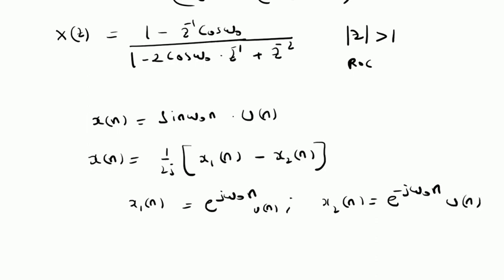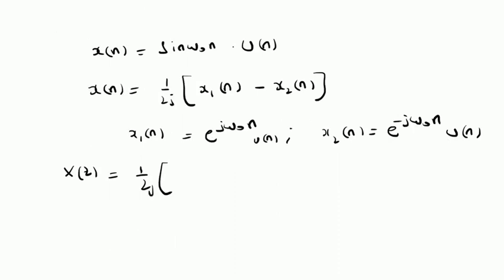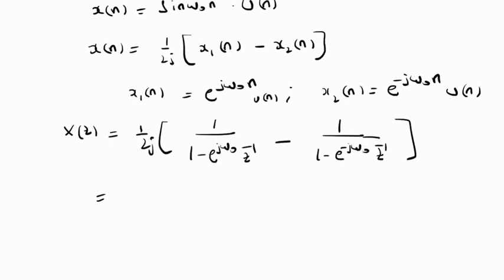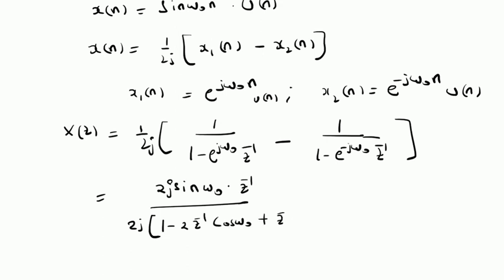We already derived the Z-transforms of these two signals. The combined Z-transform X(z) equals 1/(2j) times [1/(1 - e^(j omega naught) z^(-1)) - 1/(1 - e^(-j omega naught) z^(-1))]. Upon simplification, the 1 and -1 terms cancel each other. The numerator becomes 2j sin(omega naught) z^(-1), and the denominator is 1 - 2 cos(omega naught) z^(-1) + z^(-2), identical to the cosine denominator.